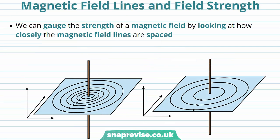We are now going to talk about how magnetic field lines can indicate magnetic field strength. We can gauge the strength of magnetic field by looking at how closely the magnetic field lines are spaced. So in the two examples below, we have a current carrying wire and current is in the upwards direction for both wires.